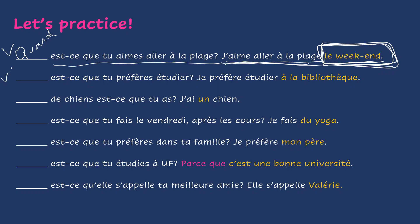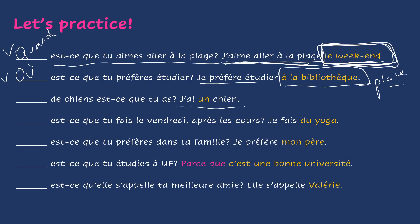Second example: Je préfère étudier à la bibliothèque. I prefer to study at the library. Here we're looking for a place, so the question word is où. Où est-ce que tu préfères étudier? Next: J'ai un chien. I have a dog. How many dogs do you have? The answer is combien. Combien de chiens est-ce que tu as?